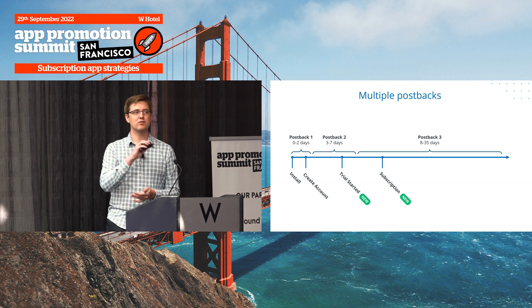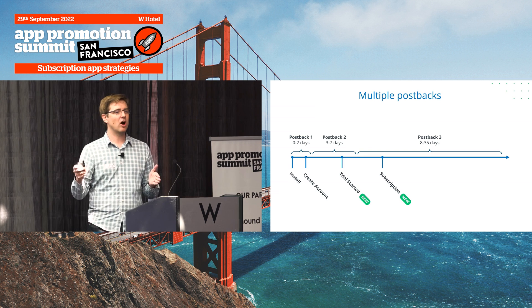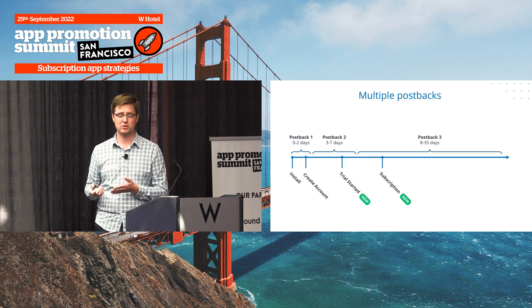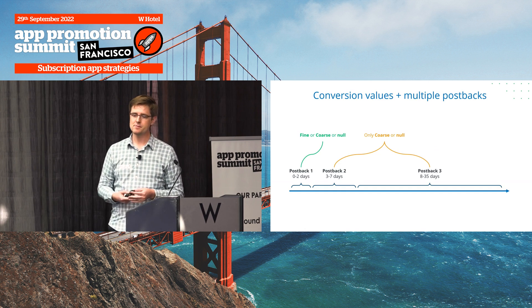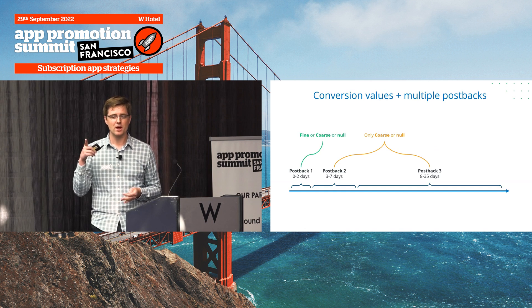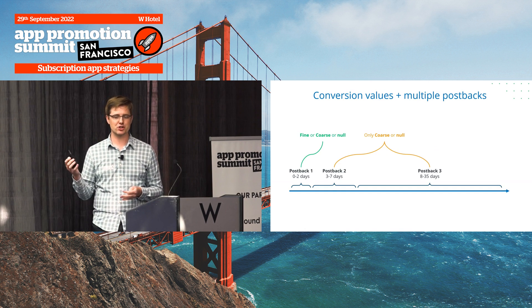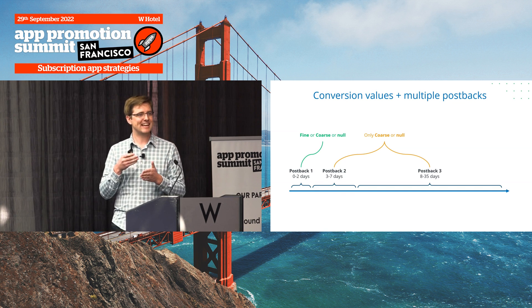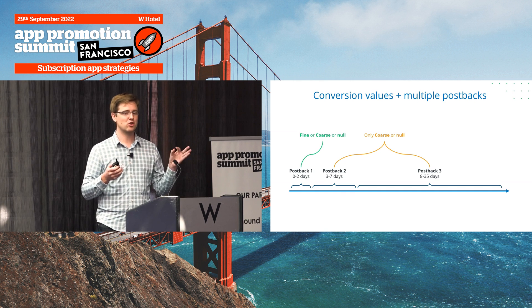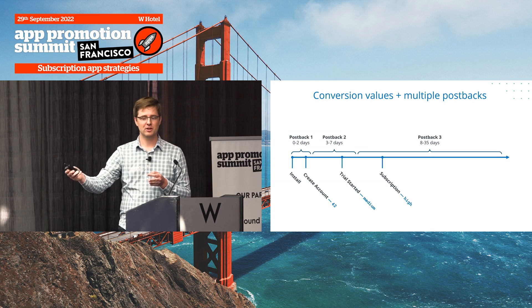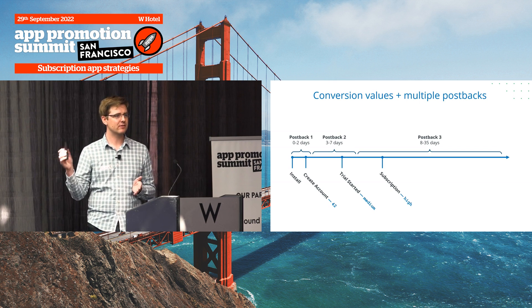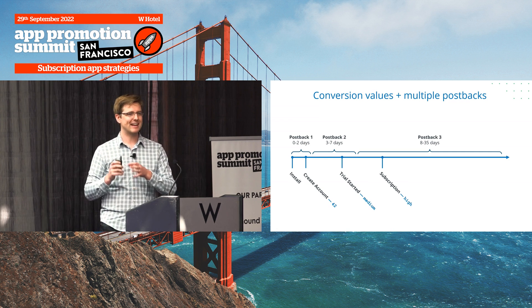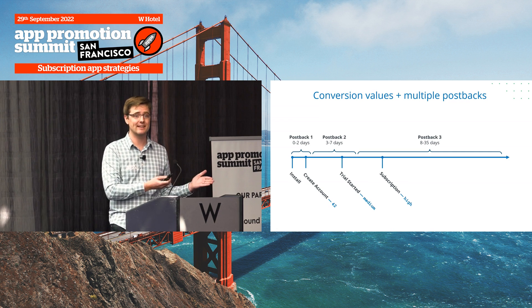SKAdNetwork is giving you more data signal — more chances to understand what's happening beyond just the first 24 hours, which is especially valuable for subscription apps where you probably don't know enough about the user that quickly. One layer of complication: not all postbacks can have every version of the conversion value. Only the first postback can get the fine-grained value; the other two are eligible only for the coarse value. But this is something your MMP should be handling for you — you shouldn't need to worry about the implementation details.